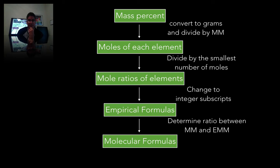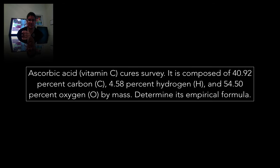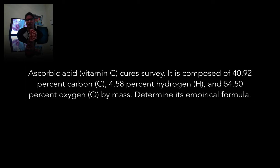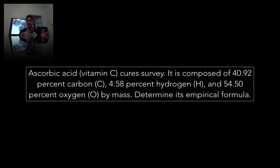I know it seems complicated with a lot of steps, but let's just dive into a question so you can see this play out. The question we're dealing with: ascorbic acid, or Vitamin C, cures scurvy. It is composed of 40.92% carbon, 4.58% hydrogen, and 54.5% oxygen by mass. In this problem we're already given the percentages each element contributes to the overall mass, and our goal is to use this information to determine the empirical formula.